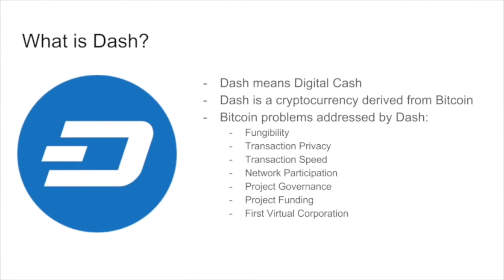Dash is also fungible, which means that any two single units of Dash are interchangeable and no one can know the difference between them because they have no history. There's also privacy on the network, and privacy is a highly valued thing within the Dash ecosystem. We have very quick transaction speeds using innovative features, and we incentivize network participation. We also have well-defined methodologies for governing the currency, and this allows the community to participate in the decision-making process. Beyond that, we have permanent recurring funding.